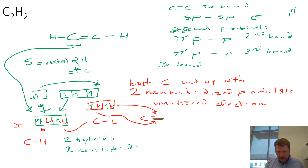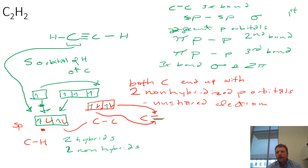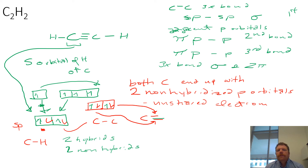So when you talk about a triple bond, you've got one sigma and two pi. If you think back to a double bond — as we saw in the previous example with C2H4 — you have a sigma bond between your two carbon atoms from two sp2 hybrid orbitals, and then adjacent p orbitals make up the pi bond. So: a triple bond has one sigma bond and two pi bonds; a double bond has one sigma bond and one pi bond; and a single bond has only a sigma bond.